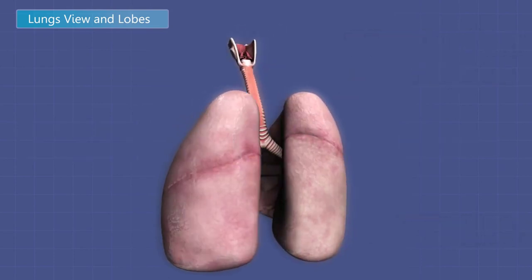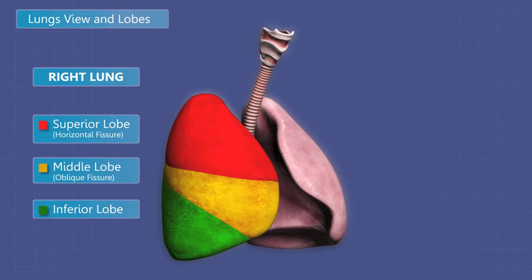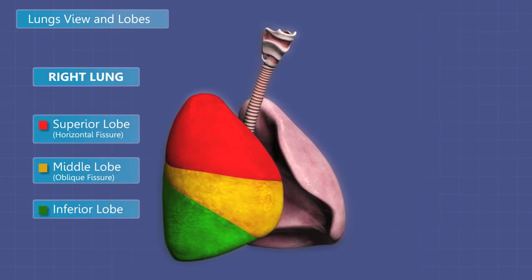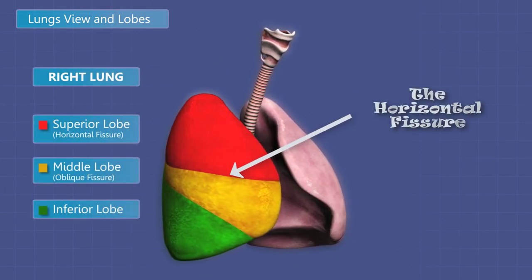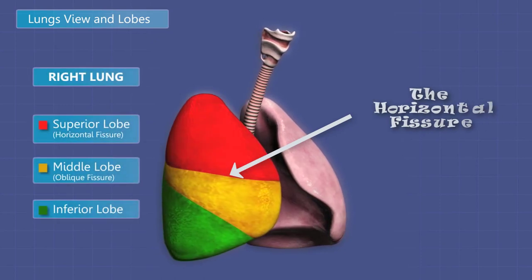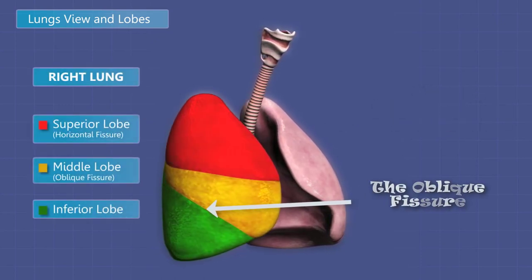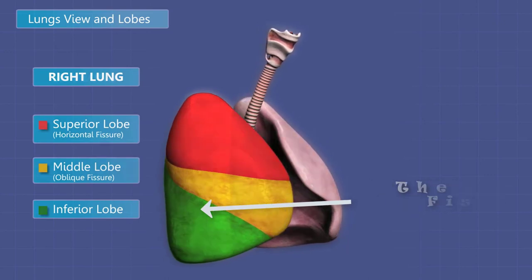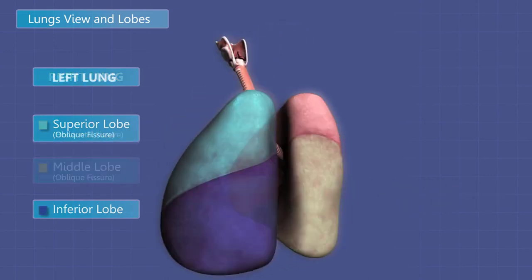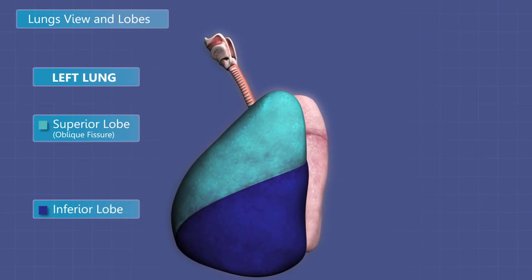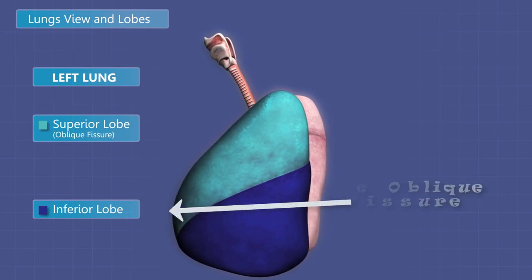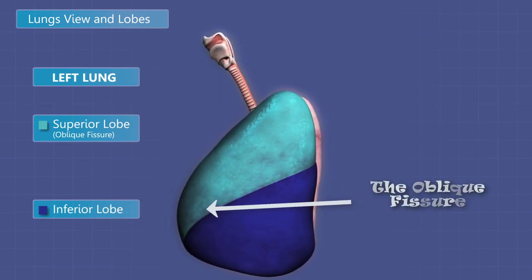The right lung has three lobes: the superior, middle, and inferior lobes. A deep groove called the horizontal fissure separates the superior and middle lobes, and a similar oblique fissure separates the middle and inferior lobes. The left lung has only a superior and inferior lobe, and a single oblique fissure.